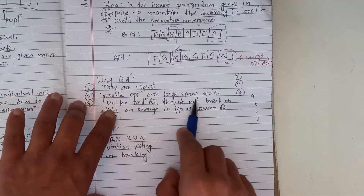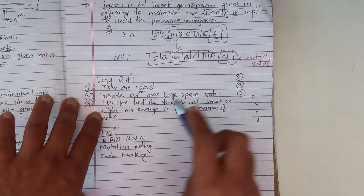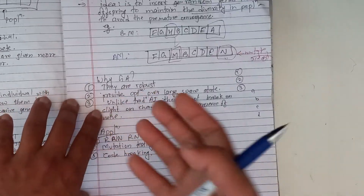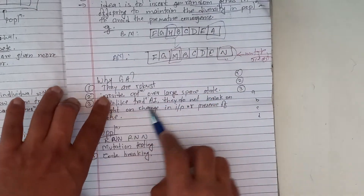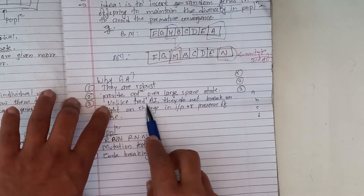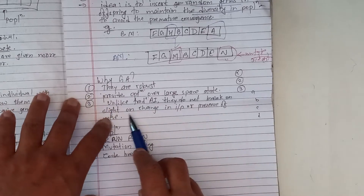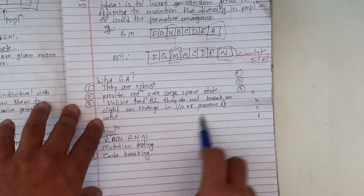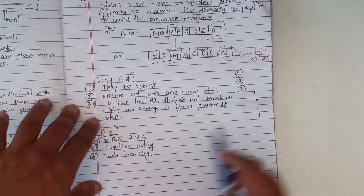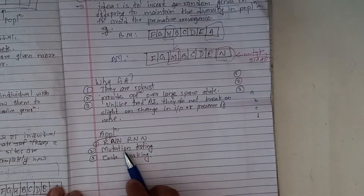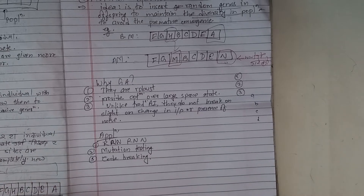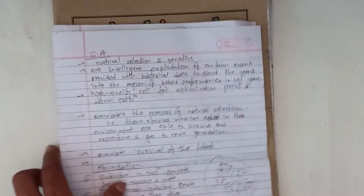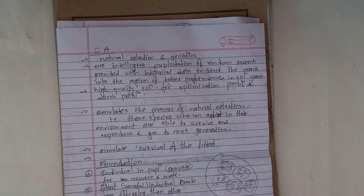Genetic algorithms are robust. They provide optimization over a large search space. We have a population layer and crossover. Unlike traditional artificial intelligence, they do not break on slight changes or in the presence of noise. I hope the genetic algorithm explanation is correct and clear. Thank you.